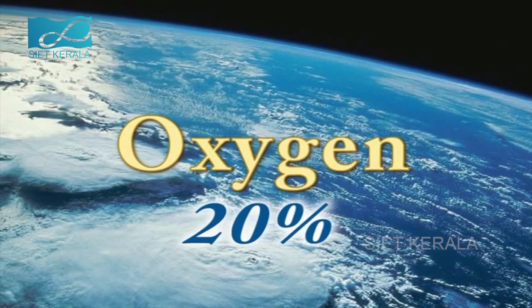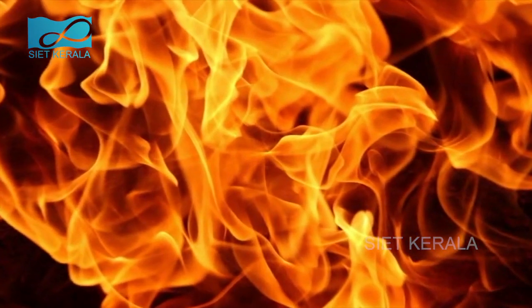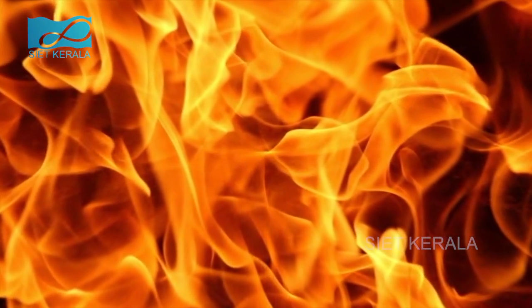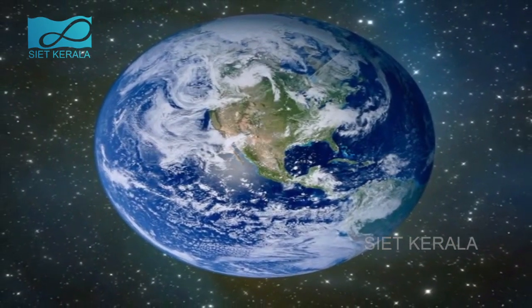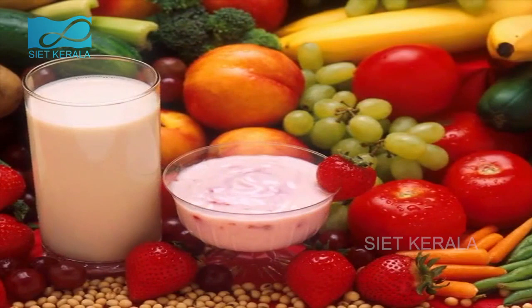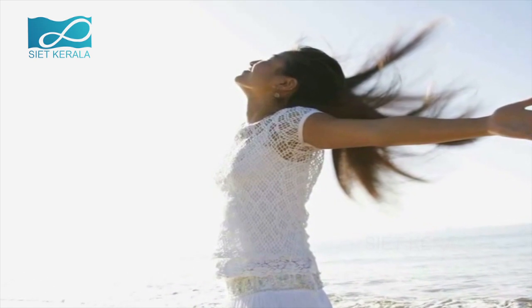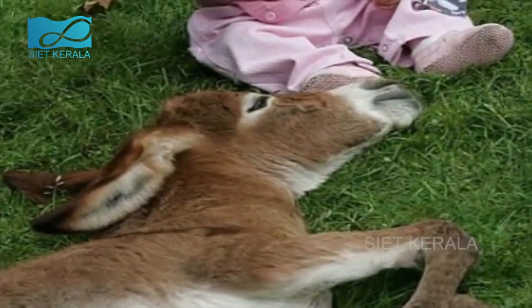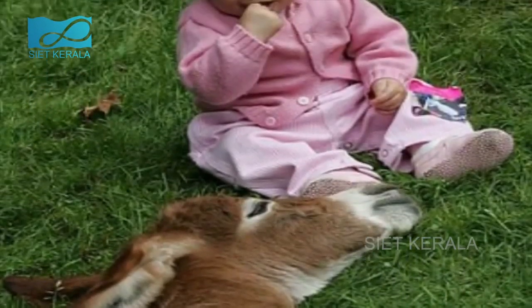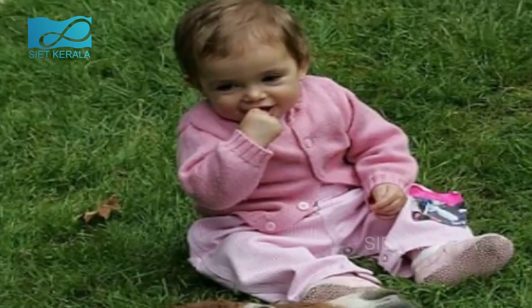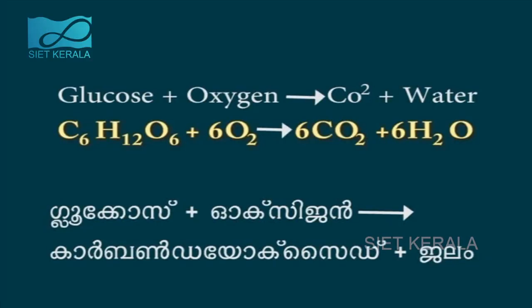Carbon dioxide is a very reactive gas and many substances burn in it. Life on Earth depends on oxygen, which takes part in a chemical reaction called respiration, in which energy is released from food. This energy powers all the processes needed to keep an organism alive. The equation for respiration: glucose + oxygen → CO2 + water.